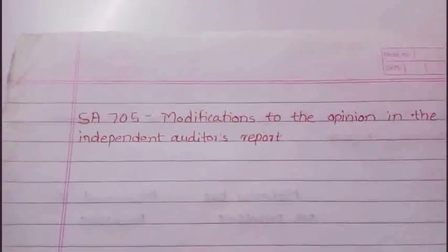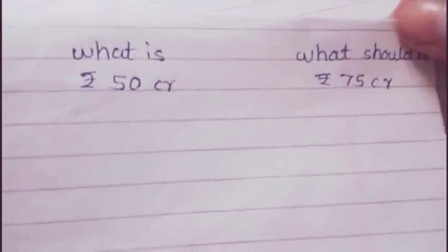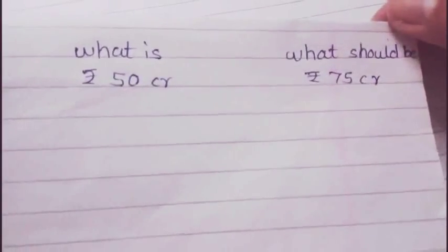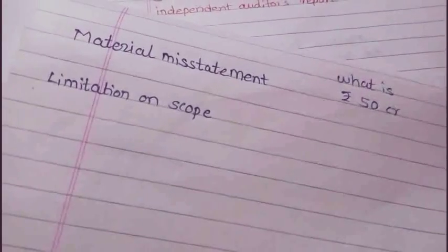There are two reasons for modification. The first reason is material misstatement, and the second is limitation on scope. A misstatement is the difference between what is and what should be. For example, inventory is shown at rupees 50 crore but it should be rupees 75 crore — the difference is the misstatement. Whether it is material depends on professional judgment on a case-to-case basis.